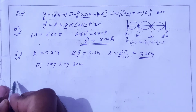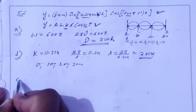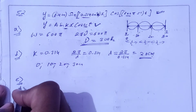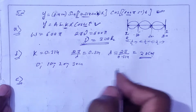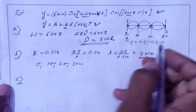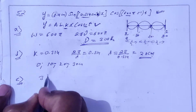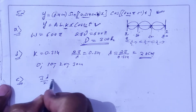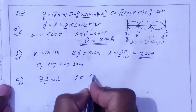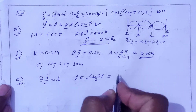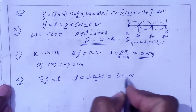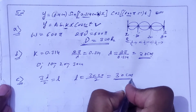Part C: What is the length of the string? For the third harmonic, the length equals three half-wavelengths: L = 3λ/2 = 3 × 20/2 = 30 cm. So the length of the string is 30 cm.